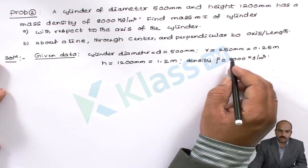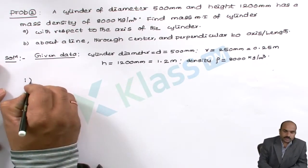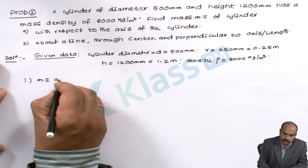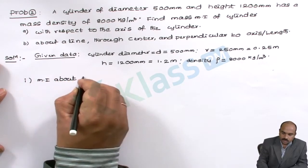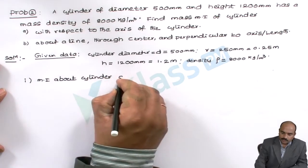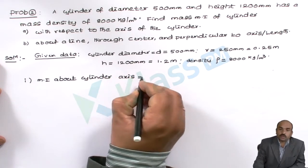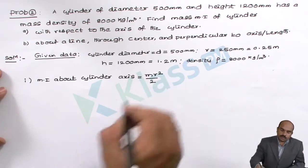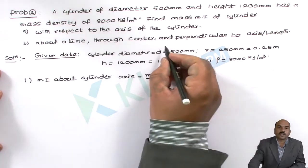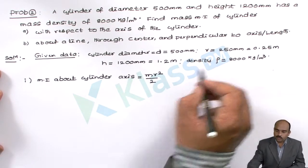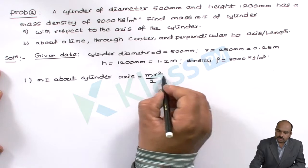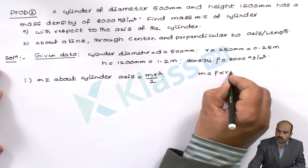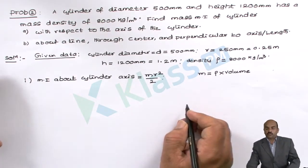Now let us calculate the mass moment of inertia. The first bit is the moment of inertia about the cylinder axis. We know the formula: I = MR² / 2. We need the mass, but mass is not given in the problem — only density is given. So we can calculate mass using: mass = density × volume.